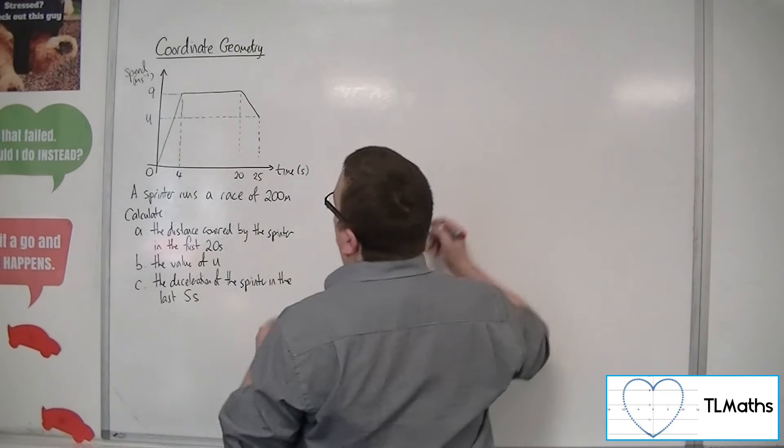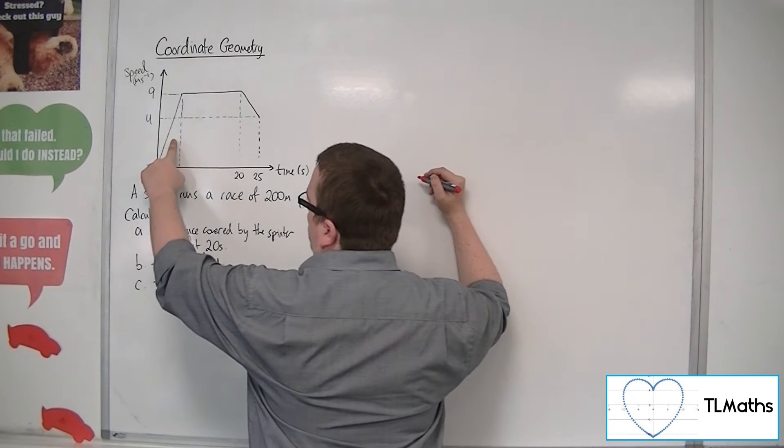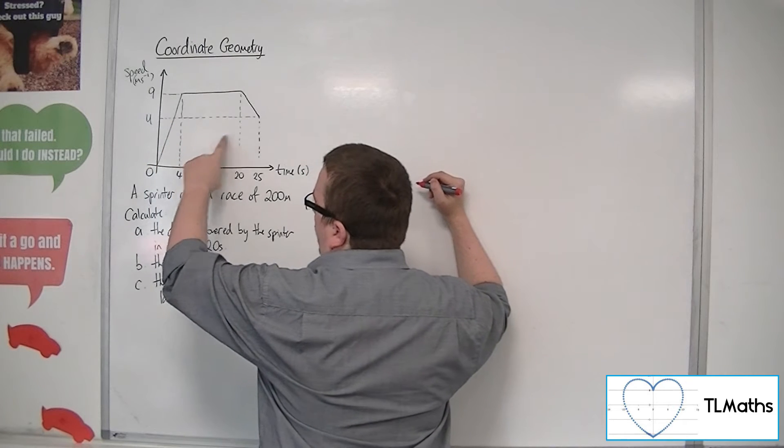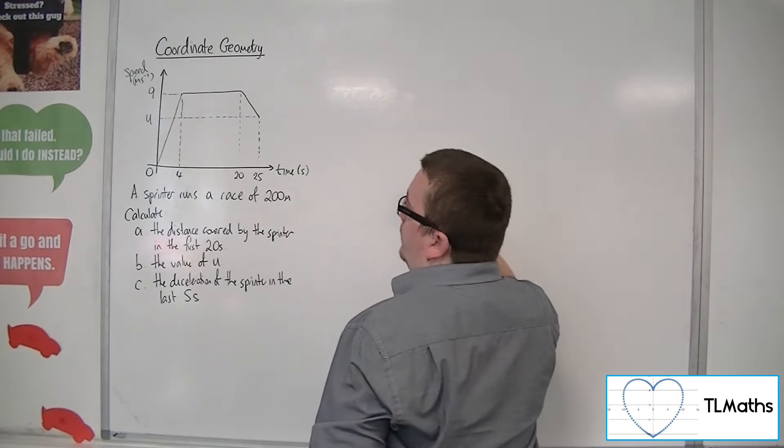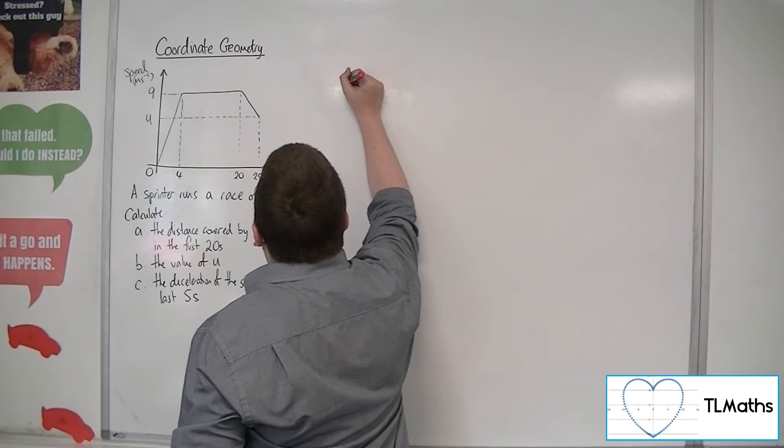We're going to find the area of this trapezium. You can either cut it up into a right-angled triangle and a rectangle, or you can use the area of a trapezium formula. So area of a trapezium formula...